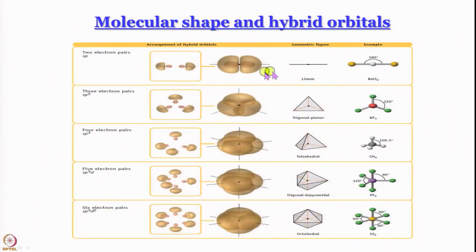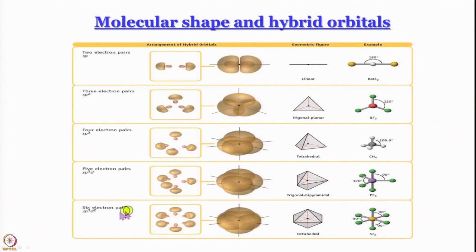This is something that we have studied: Gillespie and Nyholm's approach of valence shell electron pair repulsion theory. We know that if we have an AB2 kind of molecule then it is going to be linear. If it is AB3, where A is the central atom and B is the pendant atom, then we will get a trigonal planar molecule. AB4 tetrahedral, AB5 trigonal bipyramid, AB6 octahedral. These are all regular molecules with a central atom, and it holds very nicely for metal complexes.